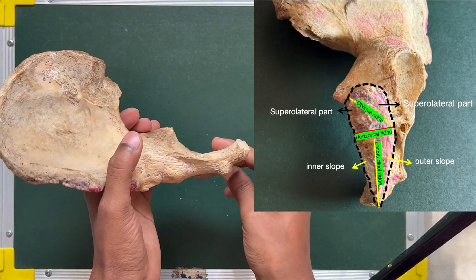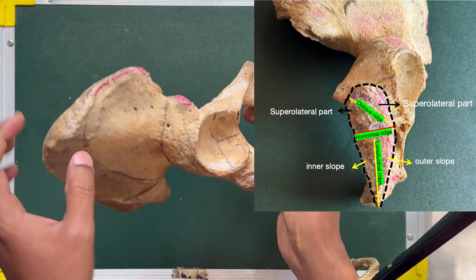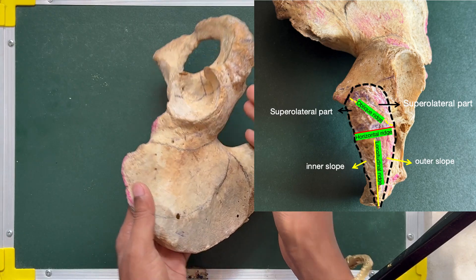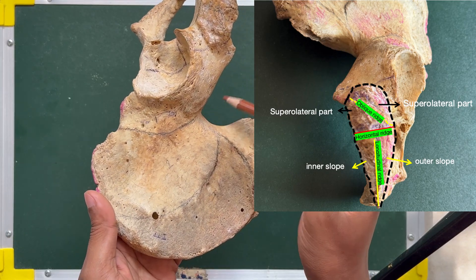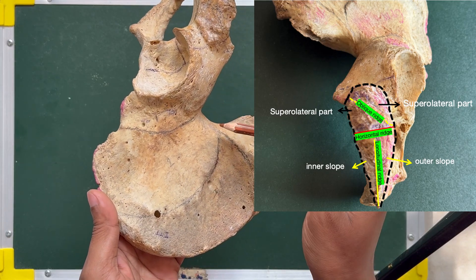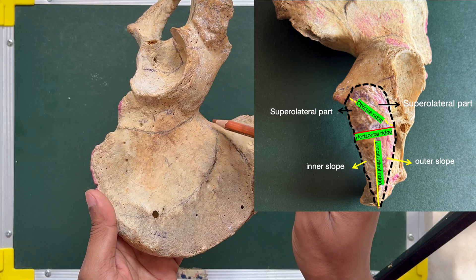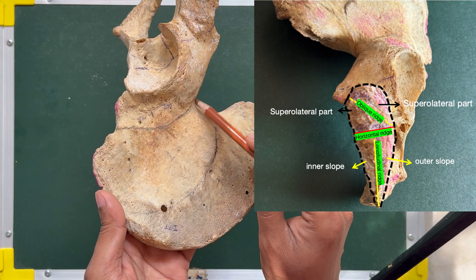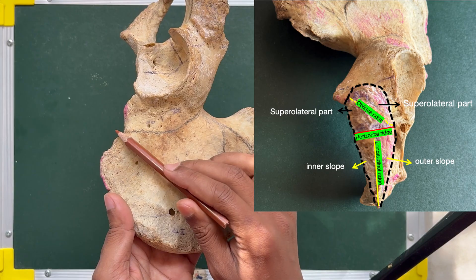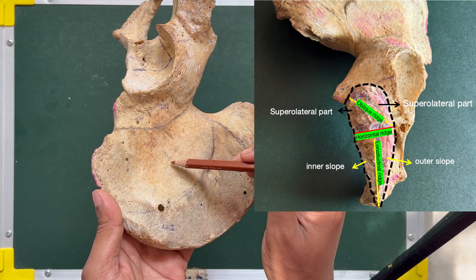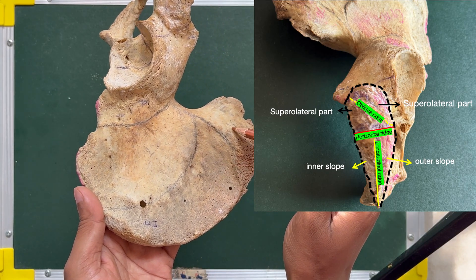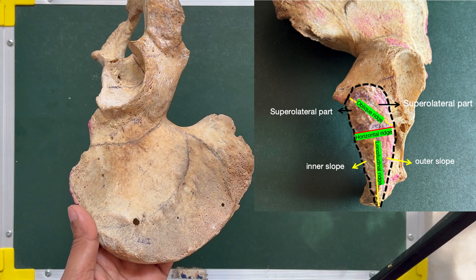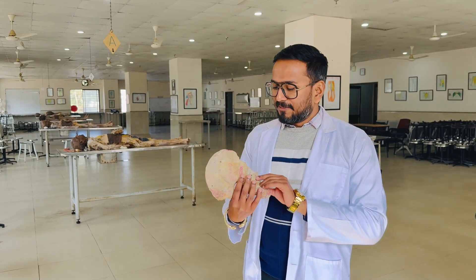These are all the features of the ilium, ischium, and pubis. To recap the gluteal surface: the posterior gluteal line, anterior gluteal line, and inferior gluteal line divide it into four areas. Attachments for these areas will be covered in the second half.